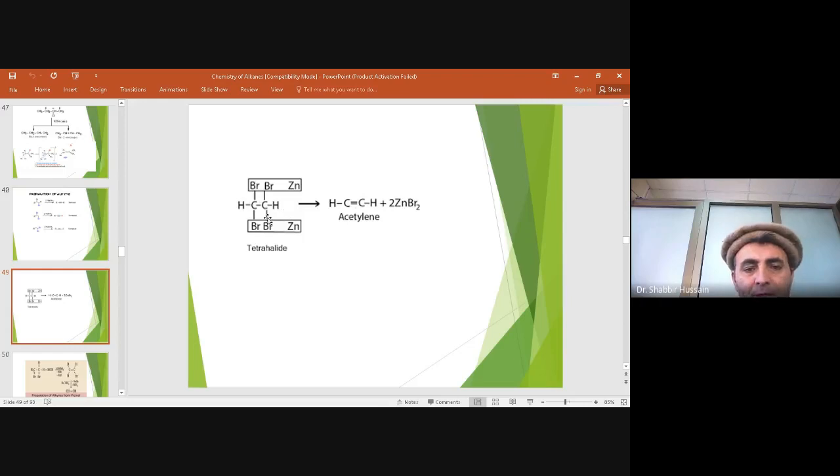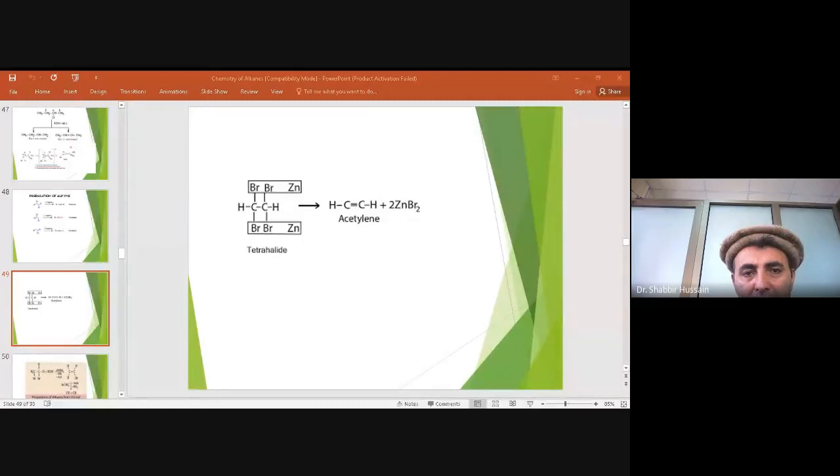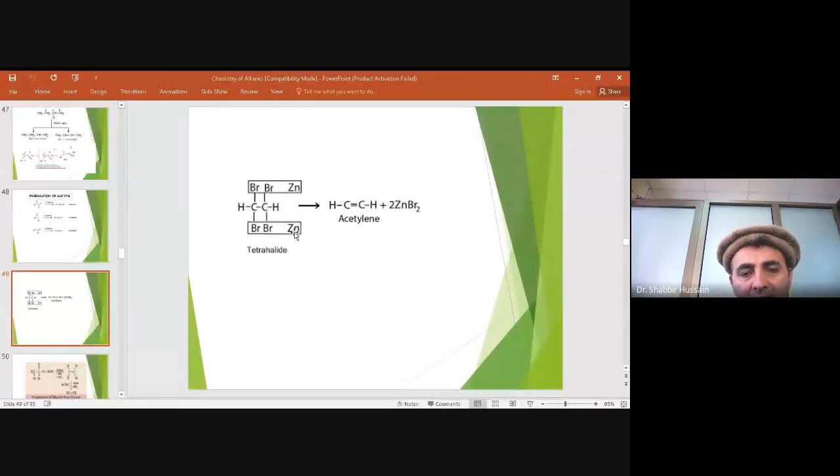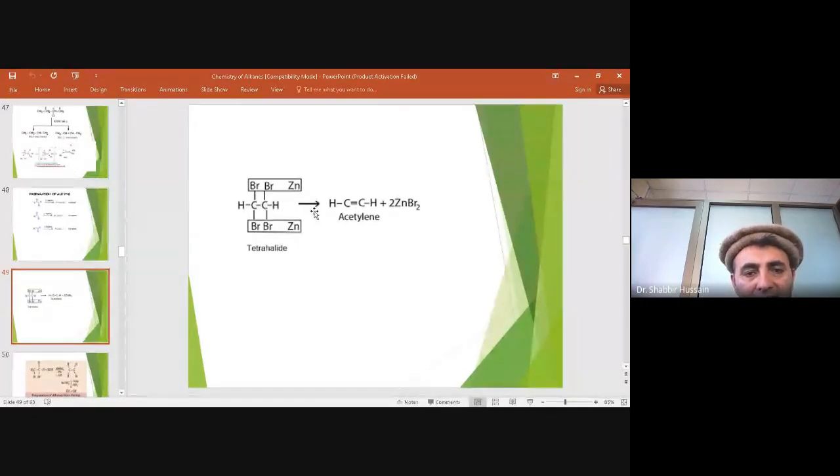The second method is when tetrahalide is treated with zinc dust in the presence of methanol as a solvent and heated. Elimination of tetrabromides with zinc occurs. As a result, two moles of zinc bromide form as a byproduct, and we are getting acetylene as the main product.